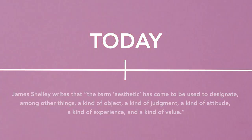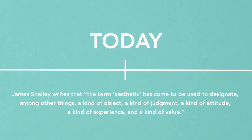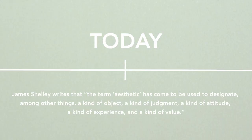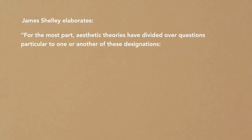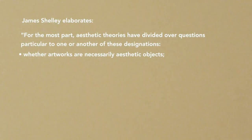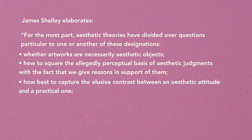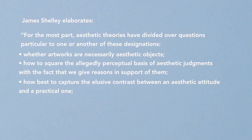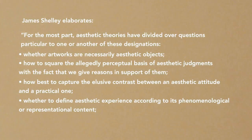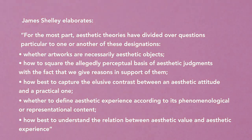Indeed, James Shelley writes that the term aesthetic has come to be used to designate, among other things, a kind of object, a kind of judgment, a kind of attitude, a kind of experience, and a kind of value. He elaborates: for the most part, aesthetic theories have divided over questions particular to one or another of these designations — whether artworks are necessarily aesthetic objects, how to square the allegedly perceptual basis of aesthetic judgments with the fact that we give reasons in support of them, how best to capture the elusive contrast between an aesthetic attitude and a practical one, whether to define aesthetic experience according to its phenomenological or representational content, and how best to understand the relation between aesthetic value and aesthetic experience.